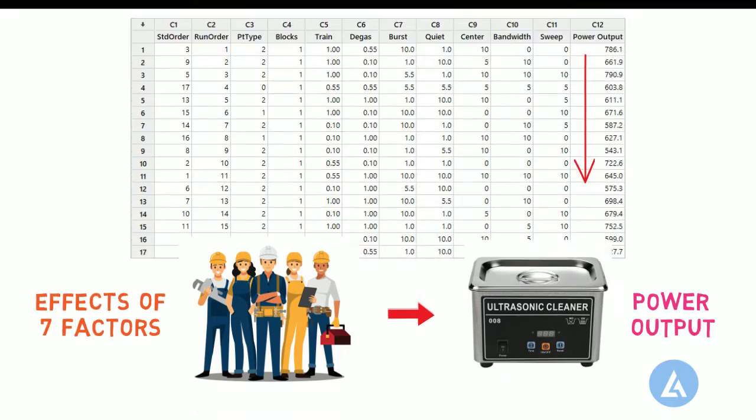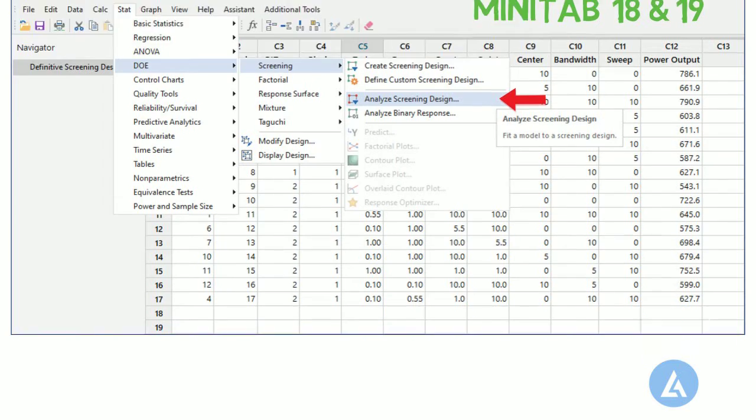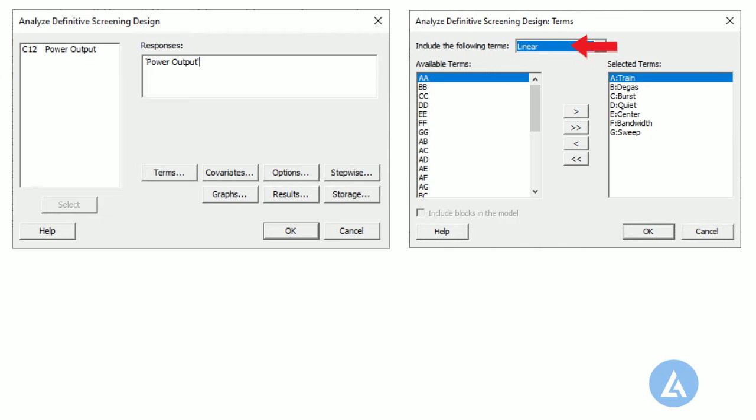To analyze definitive screening design, please follow the steps in Minitab 18 and 19. Select Stat, Design of Experiments, Screening, Analyze Screening Design. In responses, enter Power Output. Click Terms. In include the following terms, select Linear, and then click OK.